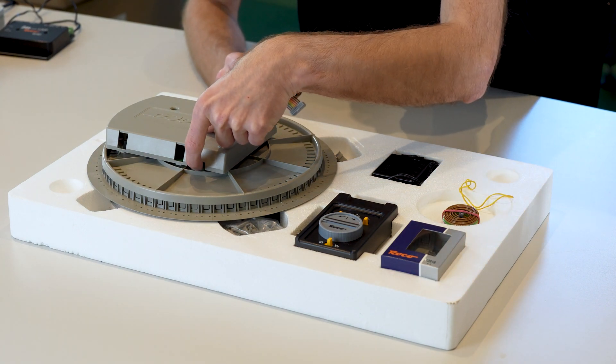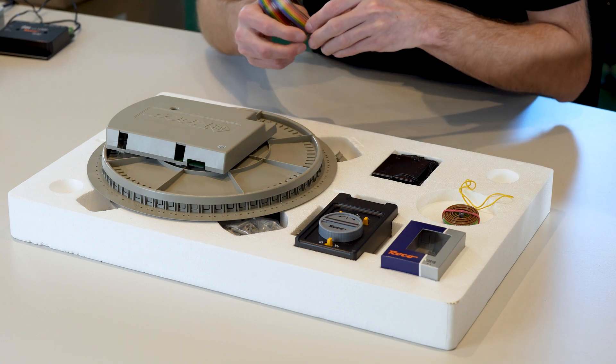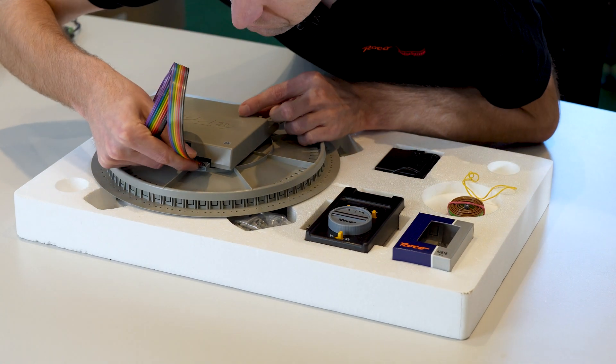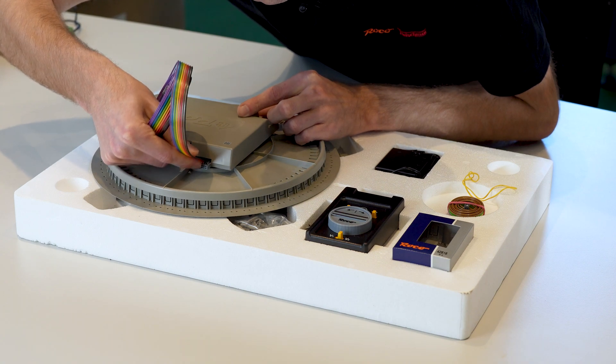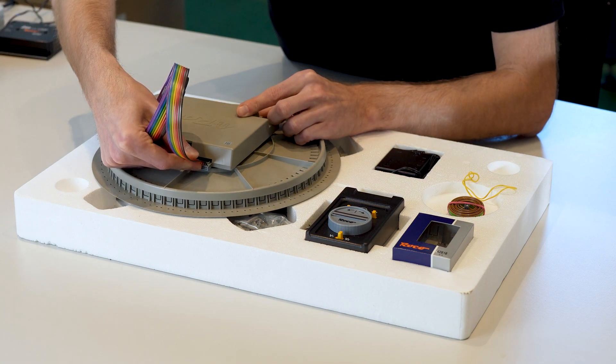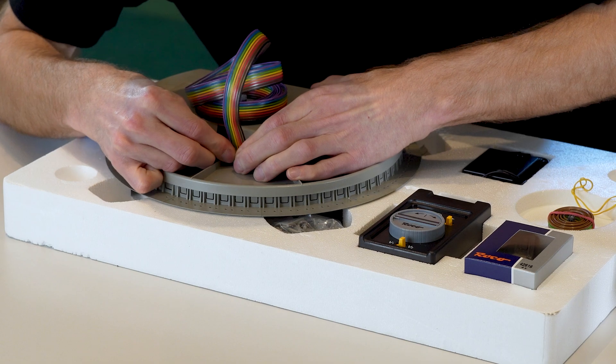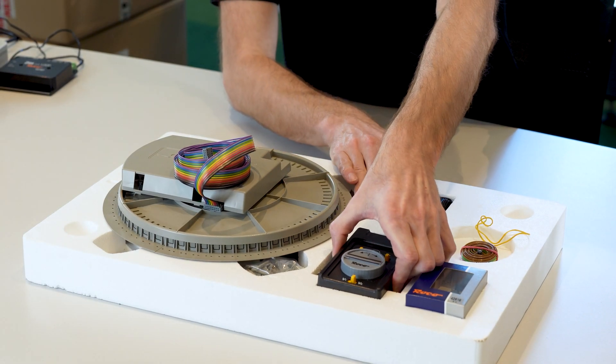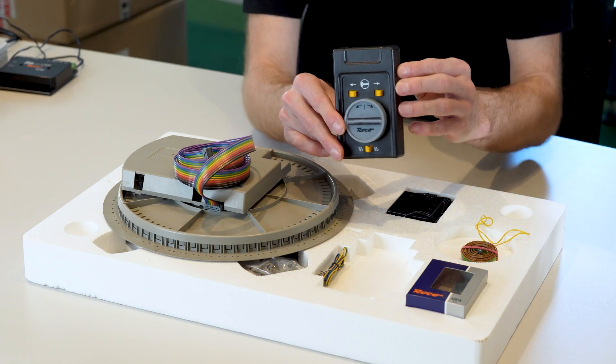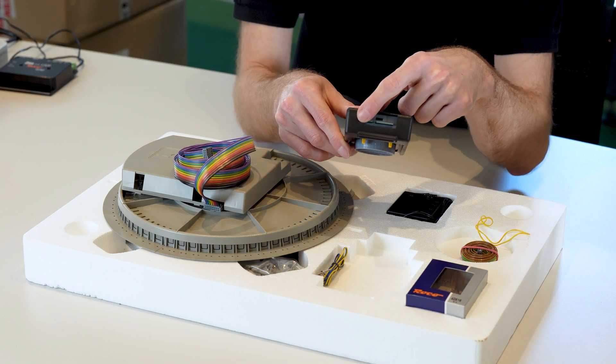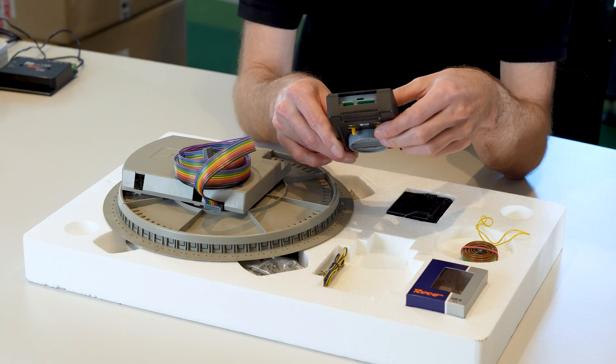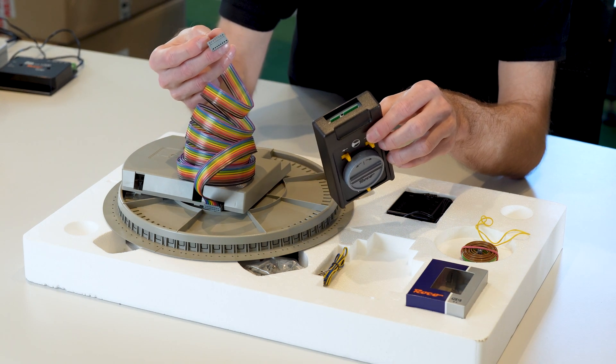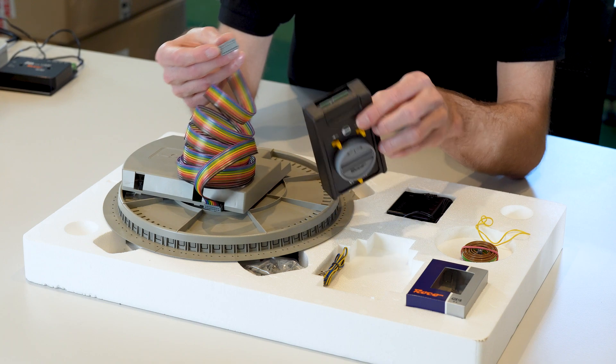Simply attach the plug to the circuit board. Then we have our control unit with two connections up here. The other end of our connection cable is connected to the wide connection. The connection cable with a narrow plug is then connected to the second side. You just plug it in on the top here.